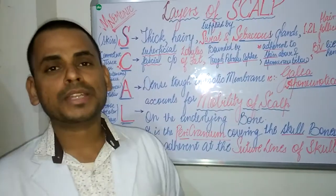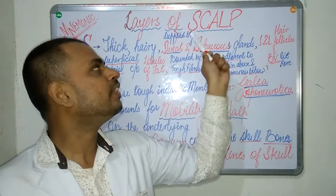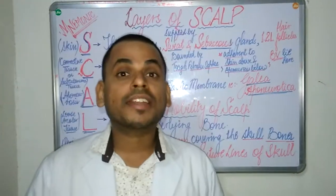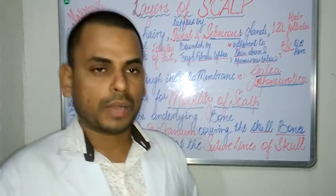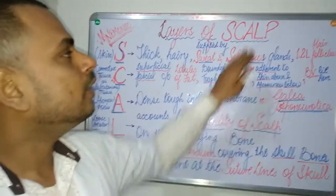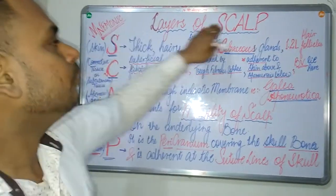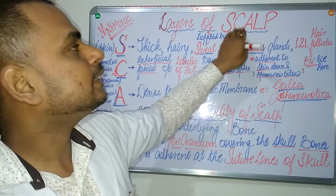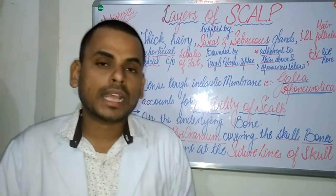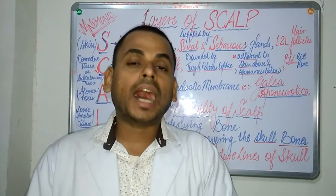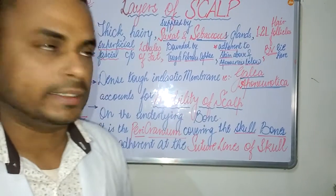The layers of the scalp can be better remembered using a mnemonic — the word SCALP itself, where each letter refers to one of the layers of the scalp in successive order. So S-C-A-L-P will tell you exactly what the layers of the scalp are.